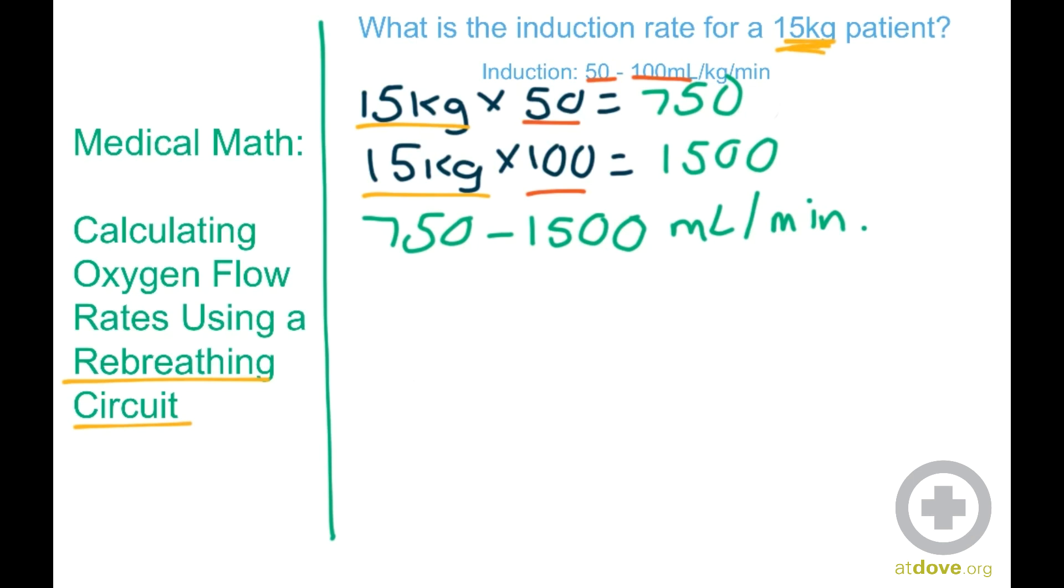So we just completed that formula, but if you looked at your oxygen flow meter, you're going to notice that it doesn't actually go up to 1,500. And that's because oxygen flow meters typically are in liters per minute. So to convert your calculations into liters per minute, you have one more step.